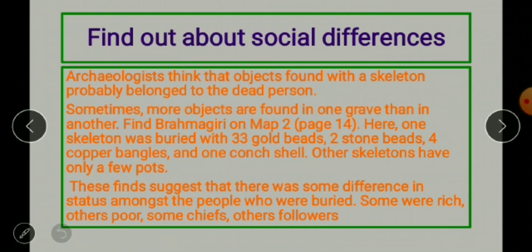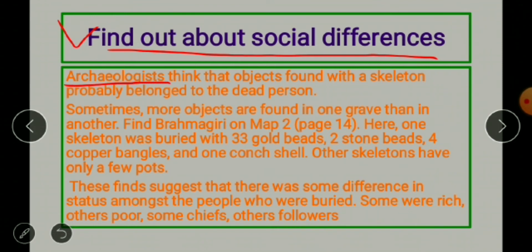The next topic is how to find out about social differences. Social differences existed at that time. Archaeologists think that objects found with a skeleton probably belonged to the dead person. Sometimes more objects are found in one grave than in others, suggesting differences in status.